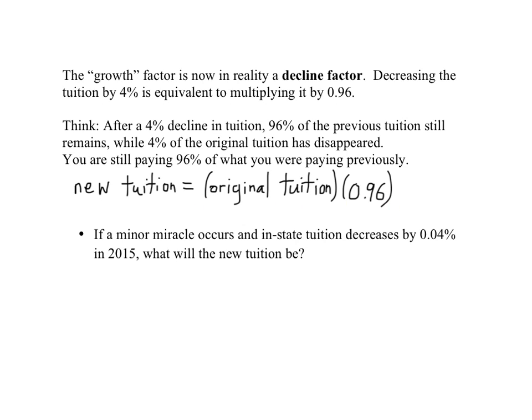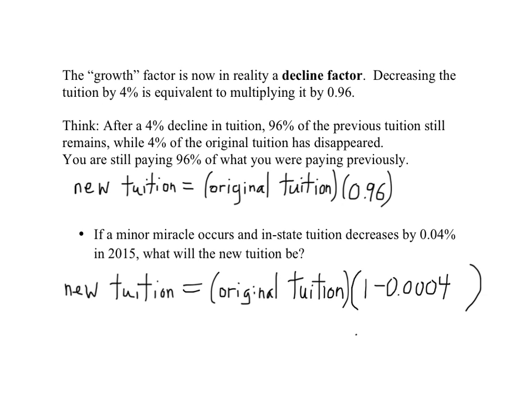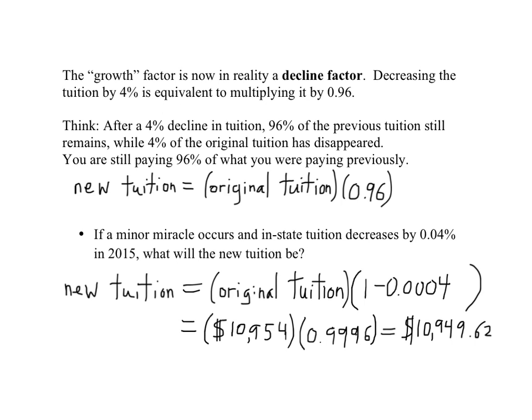The new tuition is what's still there, not what's disappeared. That happens to equal $10,515.84. As another example, suppose in-state tuition decreases by 0.04% in 2015. What will the new tuition be? The 2015 tuition is going to equal the 2014 tuition times 1 minus 0.0004, where 0.0004 comes from converting the percent decrease to a decimal, and it's minus because it's a decrease.